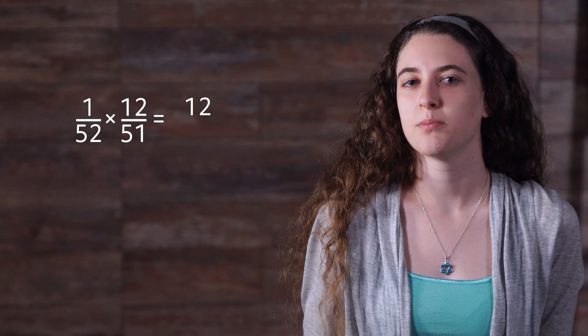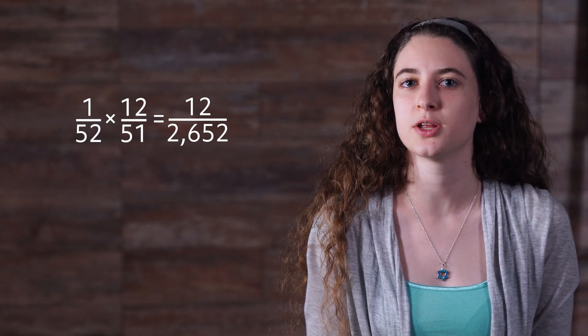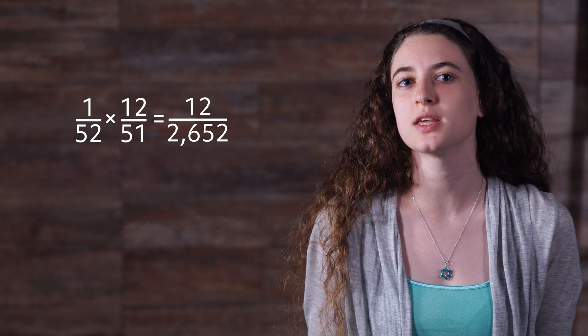Following the rule of multiplication, we would multiply 1 out of 52 and 12 out of 51. Multiplying the numerators would give us 12, and multiplying the denominators — 52 times 51 — would give us 2,652, leaving us with a probability of 12 out of 2,652. Since both the numerator and denominator are even numbers, we can simplify by dividing both by 12, giving us a final answer of 1 out of 221.